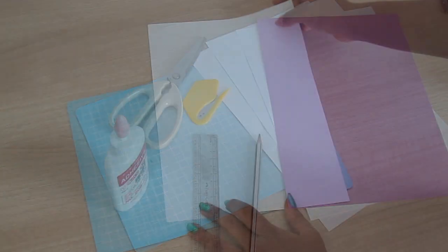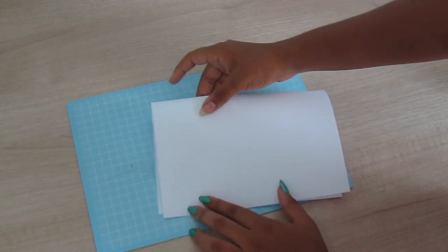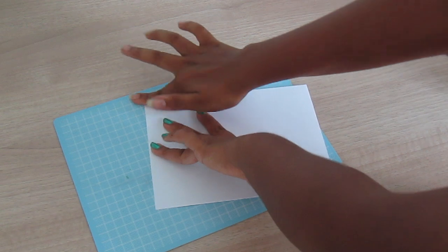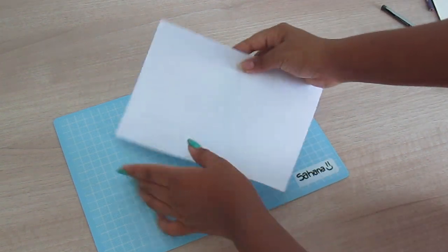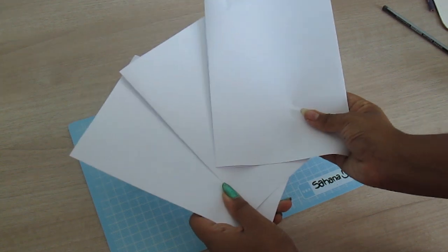Now let's get started. To begin, take your white sheet of paper and fold it in half. Make sure it's neat and then crease it well. You want to do this to all three sheets of white paper.